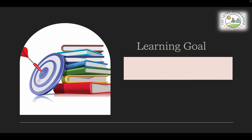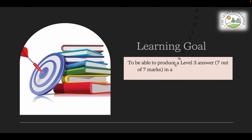The learning goal of this session is to show you what is needed in order to achieve a Level 3 response to this question in your Paper 1 exam — to be able to produce a Level 3 answer in a case study related to overpopulation in Nigeria.